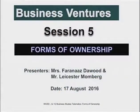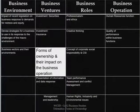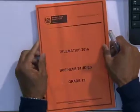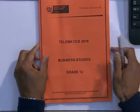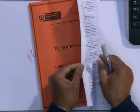Learners, today we're going to look at forms of ownership, and you should know that forms of ownership forms part of your main topic called business ventures. We are going to look at the different types of forms of ownership and the impact that the form of ownership has on a particular business. All the content we're going to cover today is contained in this telematics booklet, Business Studies 2016, particularly pages 22 to 28. So you do not have to take notes frantically trying to keep pace with what's on the slides.